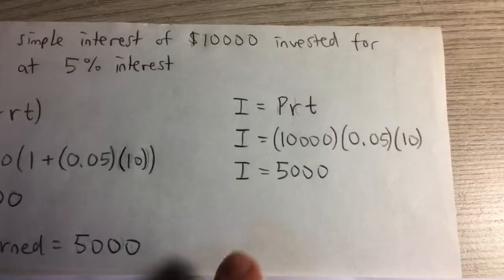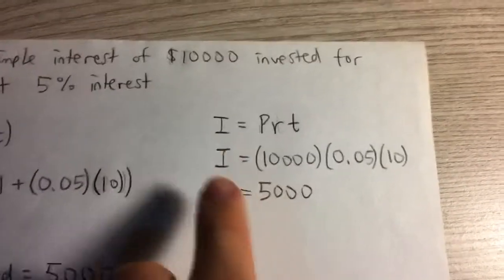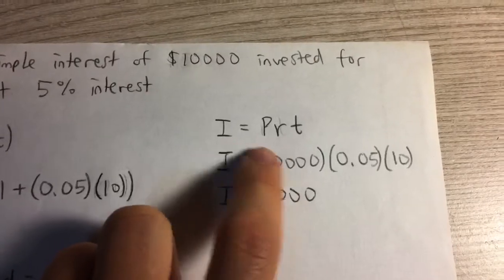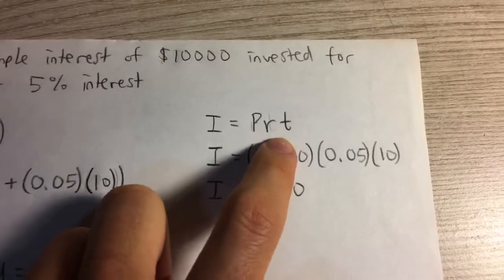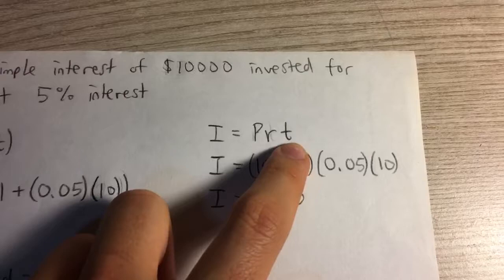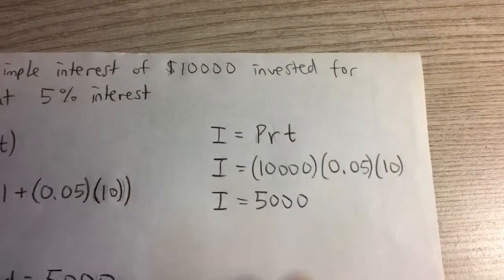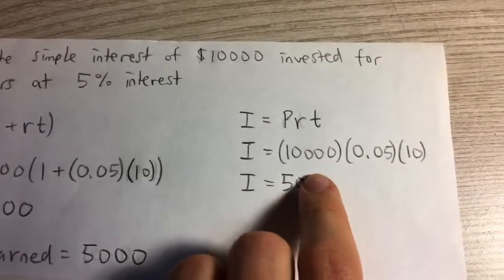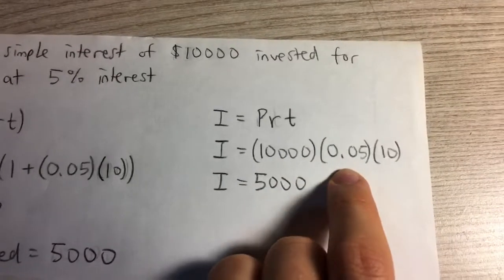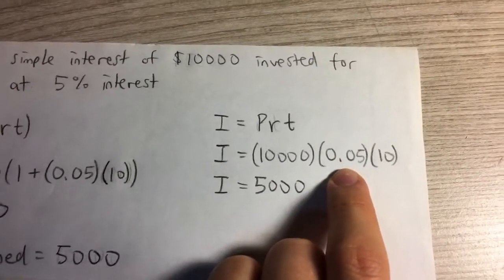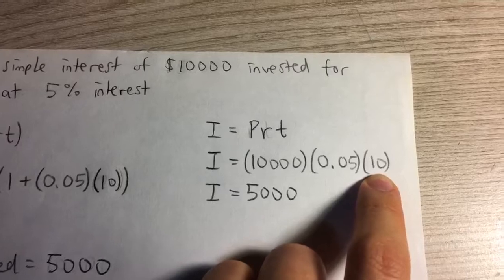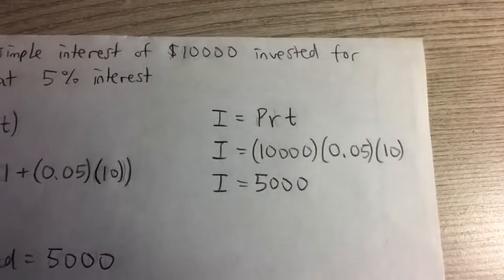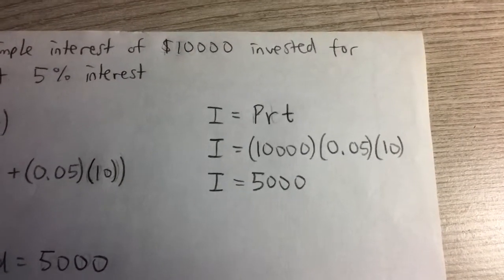Another way you could do this is the formula for simple interest, which is equal to the principal times the interest rate times time in years. So all you have to do is plug in $10,000 times 0.05, again converting to a decimal, times 10 years. And you're going to see that the interest you earn is $5,000.